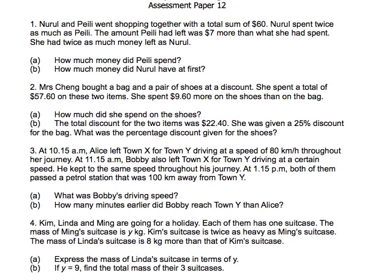Let's take a look at the question first. The question says Mrs. Cheng bought a bag and a pair of shoes at a discount. So remember that this pair of shoes and this bag is already a discounted price. Now, it says she spent a total of $57.60 on these two items. And that she spent $9.60 more on the shoes than on the bag. So a model should come into your head immediately.